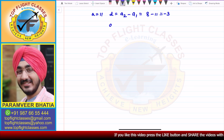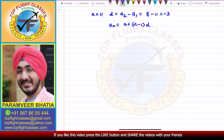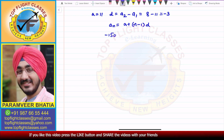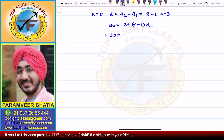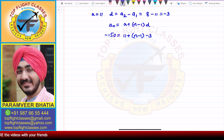Now from here, if I write the nth term formula, that is A plus N minus 1 into D. AN in this case is minus 150, A is 11, N we have to find, and D is minus 3.